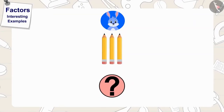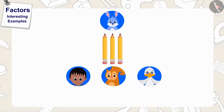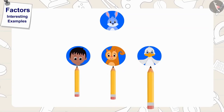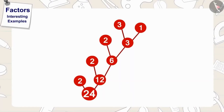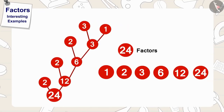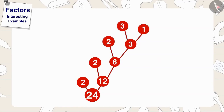Children, can this friend divide these three pencils equally among his friends? Yes, this friend can share these three pencils equally by giving one pencil to each of his three friends. Golu added it to his picture by writing the numbers three and one. Children, do you see anything special in Golu's portrait? Yes, all the factors of twenty-four are seen in Golu's picture. Such a picture in which we show all the factors of a number is called a Factor Tree.